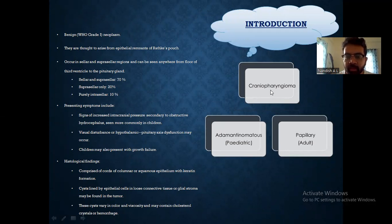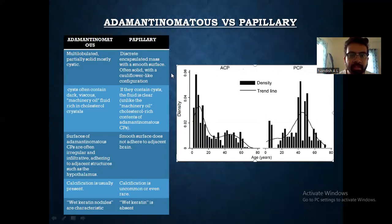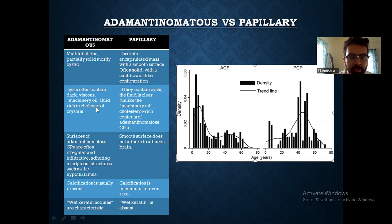Craniopharyngioma is further divided into adamantinomatous, which is more common in pediatrics, and papillary, more common in adults. Adamantinomatous types are multi-lobulated and partially solid, mostly cystic. Papillary types are discretely encapsulated masses with a smooth margin, often solid with a cauliflower-like configuration. In adamantinomatous types, the cysts often contain dark, viscous machine oil fluid rich in cholesterol crystals.